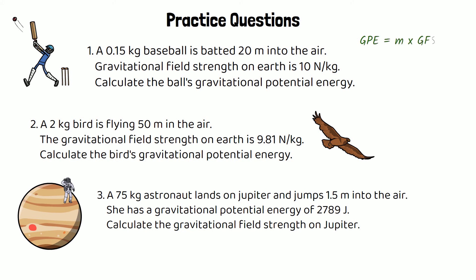So for the first one, we're using the standard equation, GPE equals mass times gravitational field strength times height, which is 0.15 times 10 times 20. And that gives us a gravitational potential energy of 30 joules.